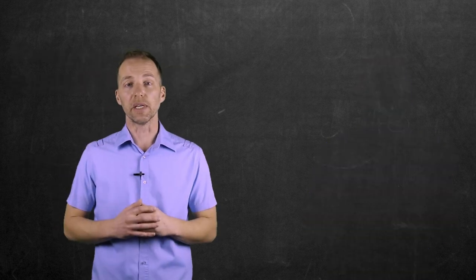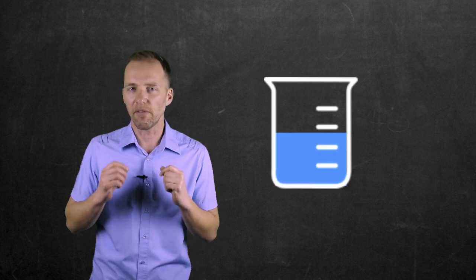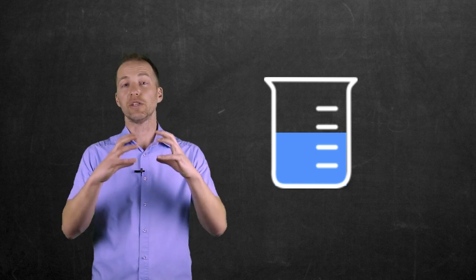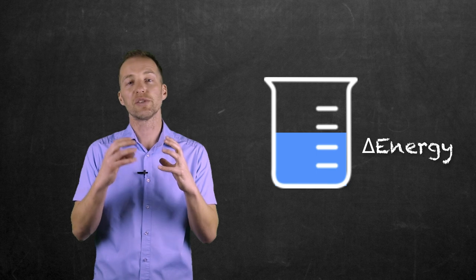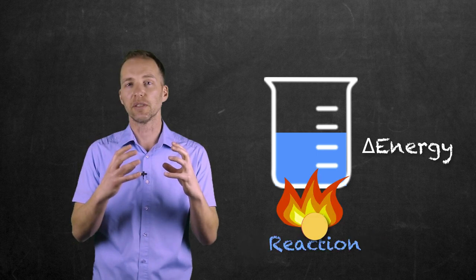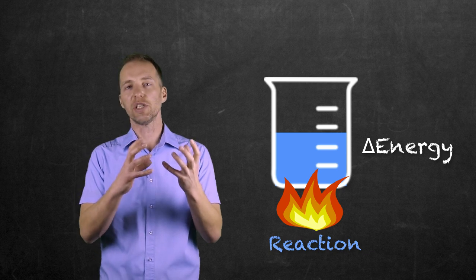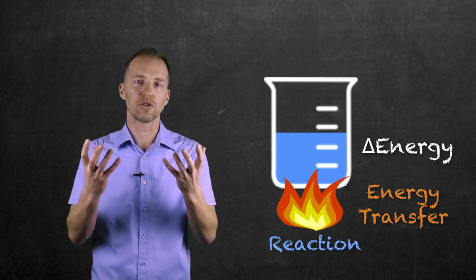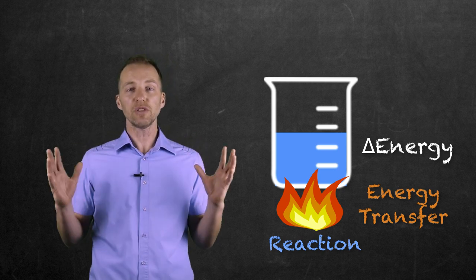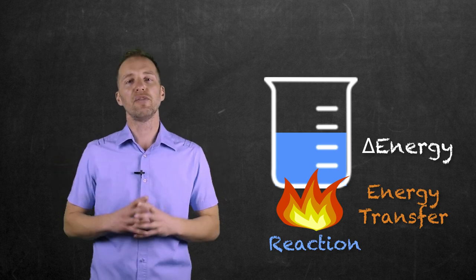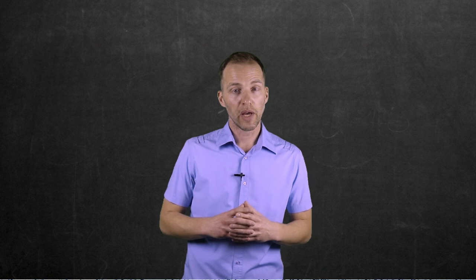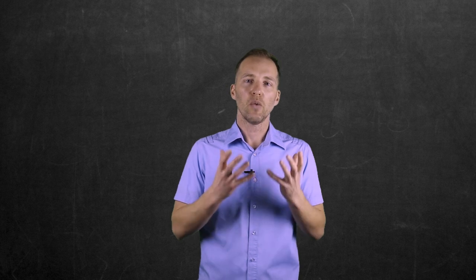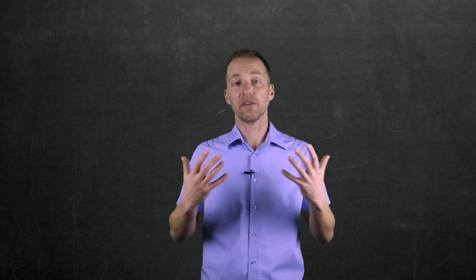How this helps us with calorimetry is that if we have a substance we understand very well, and we can analyze how much energy it took to change that substance as a result of a chemical reaction, we can then figure out how much energy must have been lost or gained by the chemical reaction. The substance we know the most about is water, so if we can figure out what impact a particular process has on the surrounding water, we can work backwards to find how much energy was lost or gained.